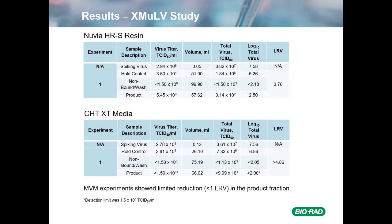Here are the results of the XMULV study for both Nuvia HRS and CHT-XT. For Nuvia HRS, 6.26 logs were loaded onto the column, and the product fraction had 2.5 logs, resulting in an LRV of 3.76 — a very good result for a cation exchanger, as most cation exchange steps get between 1 to 2.5 logs. For CHT-XT, 6.86 logs were loaded, none were detected in the product fraction, giving an LRV of greater than 4.86. For both MVM experiments, results showed very limited reduction — less than 1 LRV in the product fractions.